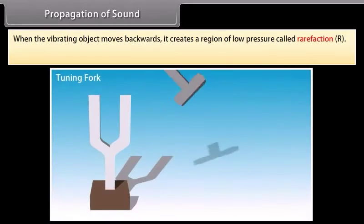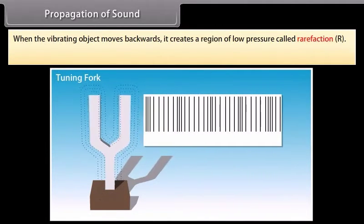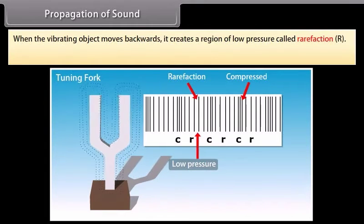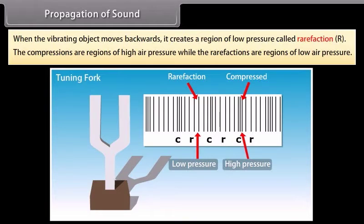And when the vibrating object moves backwards, it creates a region of low pressure called rarefaction. The compressions are regions of high air pressure while the rarefactions are regions of low air pressure. Look at this image: it shows a sound wave created by a tuning fork and propagated through the air in an open tube. These are the regions of compression and these are the regions of rarefaction.